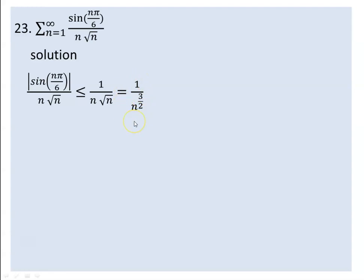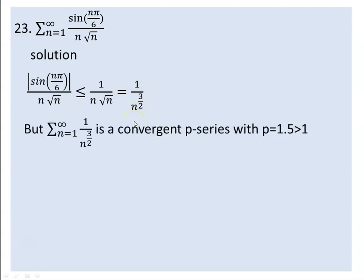The series made by this sequence is a convergent p-series because the p value is three-over-two, and three-over-two — that is 1.5 — is greater than one. So this series is convergent.